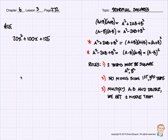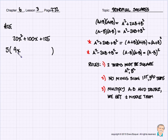Let's start off with number 25. Remember, we always want to factor out common factors before we begin. Looking at 20x squared plus 100x plus 125, it looks like we could factor out a 5, so we would have 5 times the quantity 4x squared plus 20x plus 25.